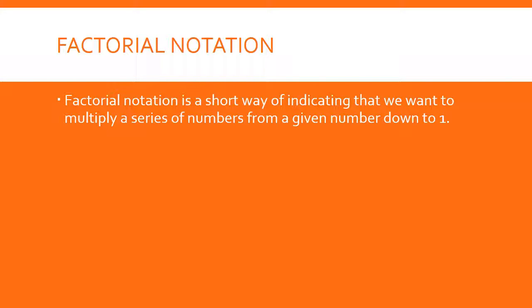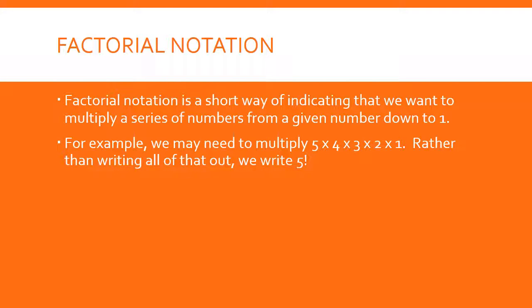Factorial notation is a short way of indicating that we want to multiply a series of numbers from a given number down to one. For example, maybe we need to multiply five times four times three times two times one. Rather than writing all that out, we symbolize it by writing a five and an exclamation point — that's five factorial. It doesn't mean that the five is really super excited about anything.